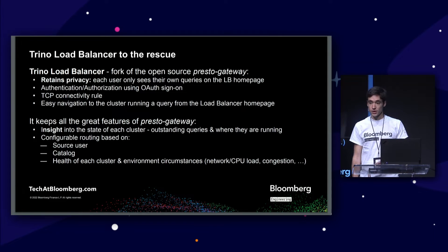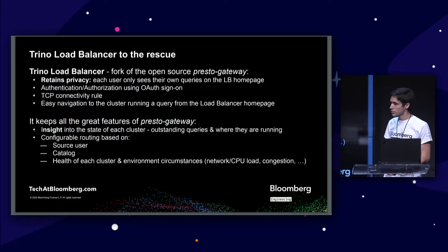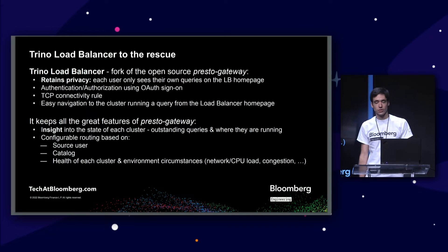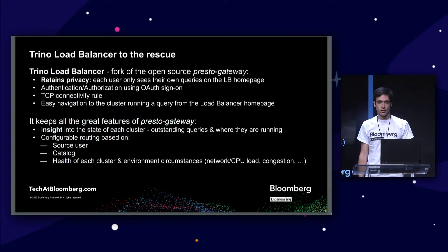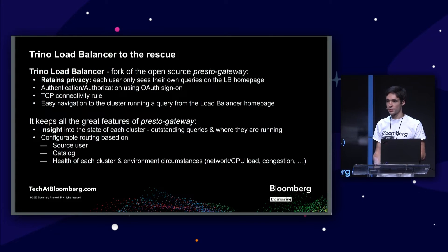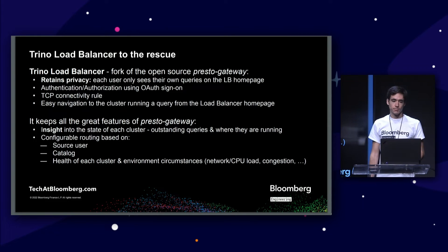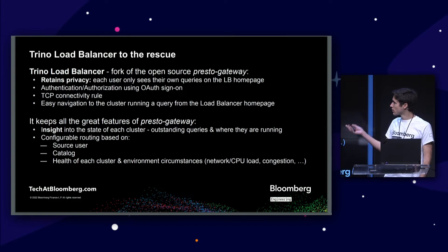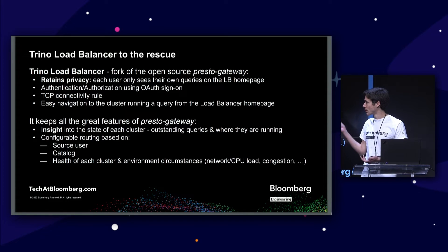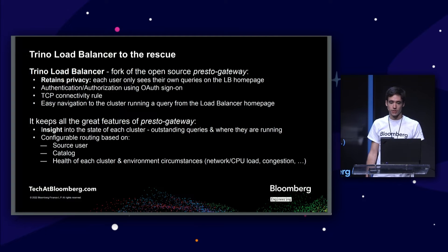We have added extra features, including the TCP connectivity rule. As part of your configuration, you can decide not to route to a cluster if certain TCP checks are not passing — for example, if you have an Iceberg catalog and your metastore is not available, you might want to route to another cluster. We also added authentication and authorization using OAuth, and easy navigation from the UI to the cluster running a query.